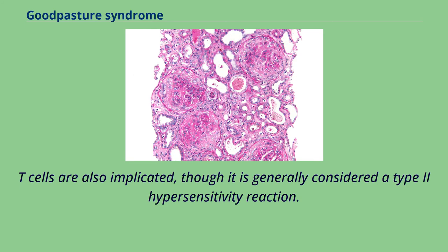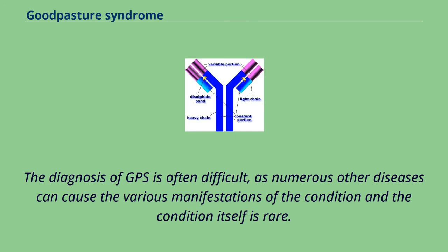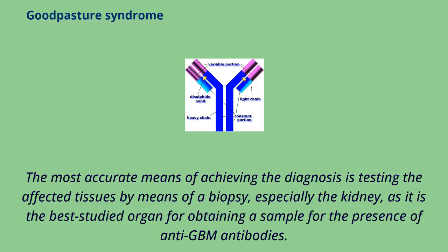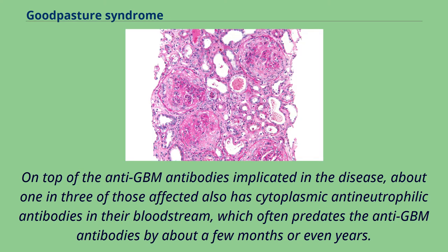T-cells are also implicated, though it is generally considered a type 2 hypersensitivity reaction. The diagnosis of GPS is often difficult, as numerous other diseases can cause the various manifestations of the condition and the condition itself is rare. The most accurate means of achieving the diagnosis is testing the affected tissues by means of a biopsy, especially the kidney, as it is the best studied organ for obtaining a sample for the presence of anti-GBM antibodies. About one in three of those affected also has cytoplasmic and neutrophilic antibodies in their bloodstream, which often predates the anti-GBM antibodies by a few months or even years.